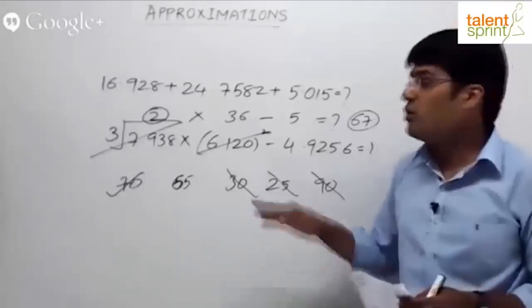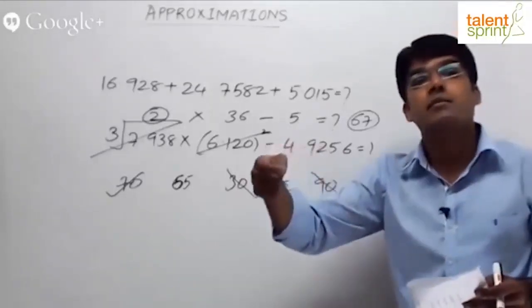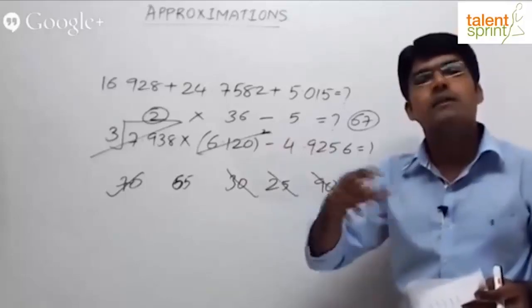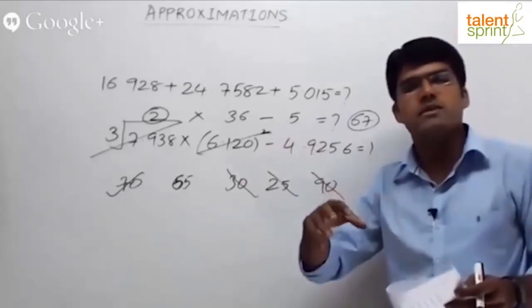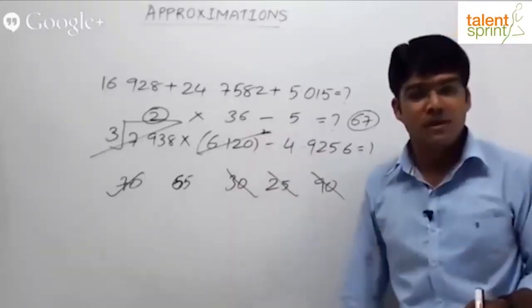So that's the approach you need to follow when two options seem to be close. First decide whether the correct answer will be more or less. Otherwise, if that situation arises, try to decide this. Otherwise, you can directly mark the answer based on which option is close to the given answer.